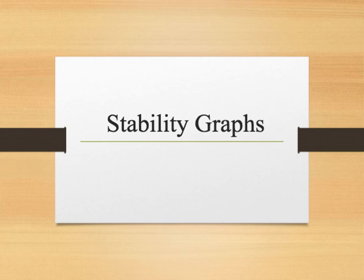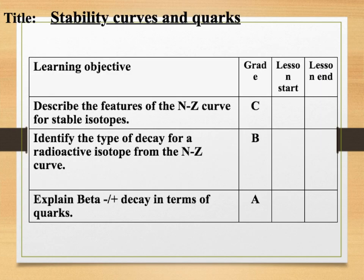This is episode 9 of the Edexcel P3 revision tutorials. Today we will be looking at stability graphs and we will also look at quarks. We will be looking at the features of the NZ curve for stable isotopes, identify the type of decay for a radioactive isotope based on this NZ curve, and we will look at both beta plus and beta minus decay in terms of quarks.